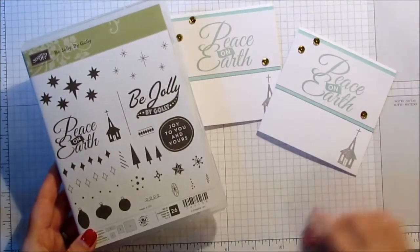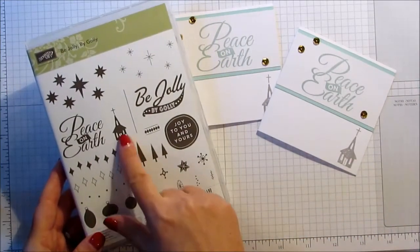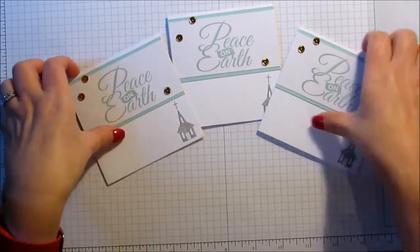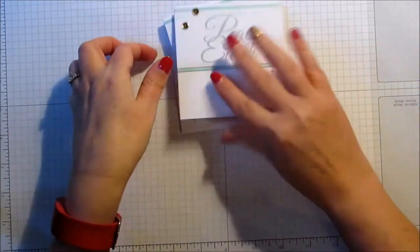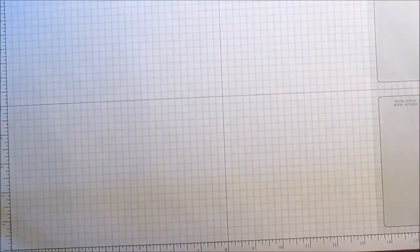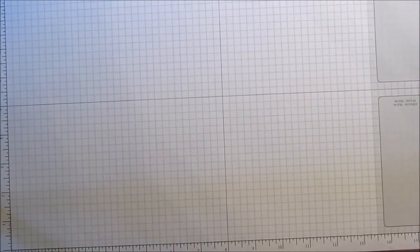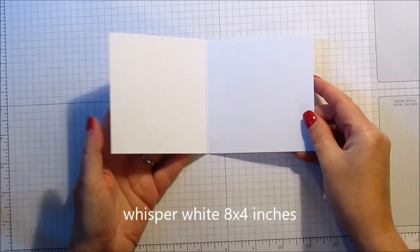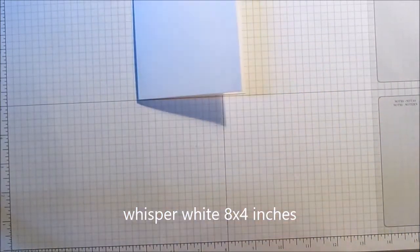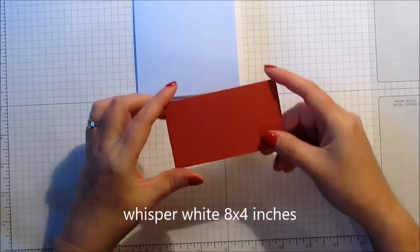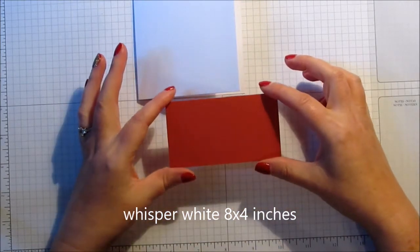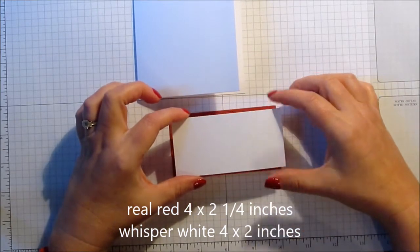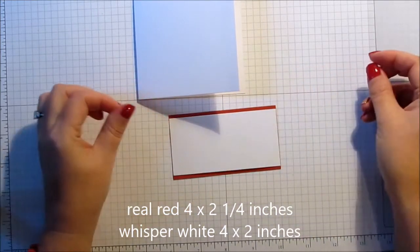On this one I used the Peace On Earth and I used the little church that's on here as well. I'm just going to show you a different version. Okay so you need Whisper White card stock, eight by four, just scored in half to make your card blank, some Real Red which is four inches by two and a quarter inches and then another piece of Whisper White which is four by two inches and these are all just going to layer up on top of each other.